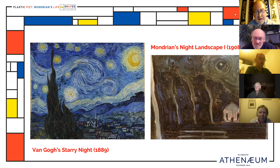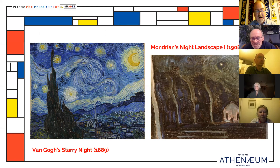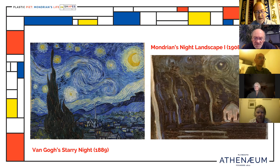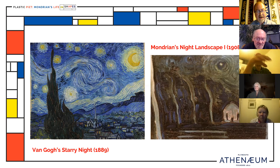In 1892, Mondrian — already a qualified teacher — entered the Rijks Academy, the Academy for Fine Art in Amsterdam. Most of his work from this period is naturalistic or impressionistic, consisting largely of landscapes, windmills, fields, and rivers, initially in the Dutch impressionist style of the Hague School. In December of that year, an exhibition of paintings by Vincent van Gogh moved to Amsterdam, and Mondrian went to see it. The work had a profound effect on him. Van Gogh's Starry Night of 1889 can be seen as a direct influence in later works such as the 1908 Night Landscape.